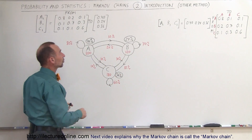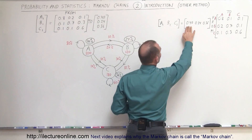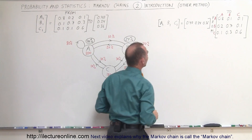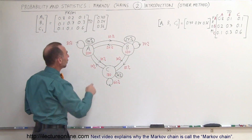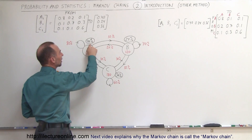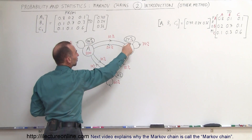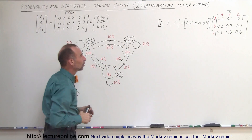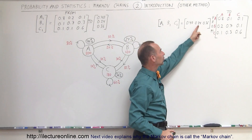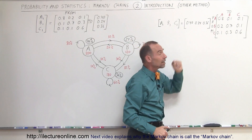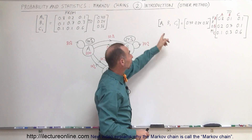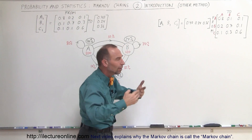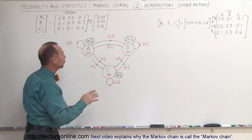Again, notice the current state is the number of customers in each location as a percentage or fraction of the whole. So 40% go to A, 24% go to B, and 36% go to C, which is indicated with our current state matrix right here. This is going to be the future matrix — what will happen a week later when people have moved to different stores?